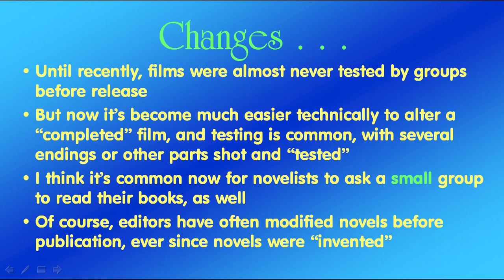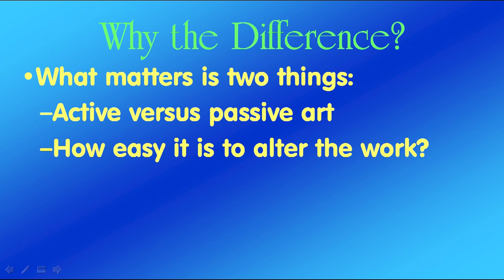Mainly, though, it's because these are not activities — these are passive — whereas games are activities, and that makes a tremendous amount of difference. Now, to continue this a little more: until recently, films were almost never tested by groups before release, but now it's become relatively easy to alter a completed film, especially with digital editing, and testing is now common. The filmmakers will make films with several endings, or they'll try different things in other parts of the film, and then test it with audiences. So again, why the difference? There are two things: active versus passive art, and how easy is it to alter the work?